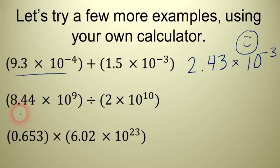Here's another one. Key this into your calculator. 8.44. So clear it out. 8.44 times 10 to the 9th divided by 2 times 10 to the 10th. And what's the answer? Your calculator will give you, hopefully, the answer 0.422.